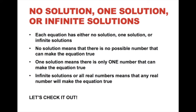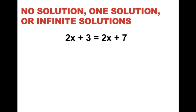We're going to go through some examples, and hopefully you can use them to work on the worksheet in class. I would recommend watching a couple, and at certain points I'll tell you to pause so you can try it yourself. First one: we have 2x plus 3 equals 2x plus 7. Just like we learned with variables on both sides, we want to get the x's on one side and the constants on the other.